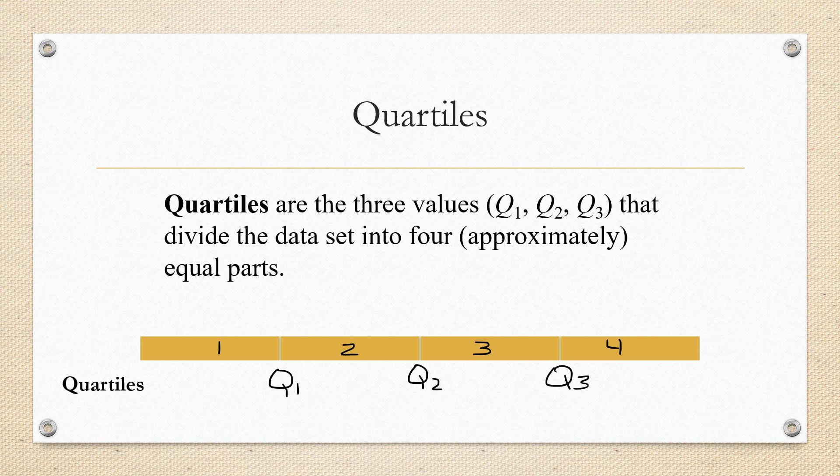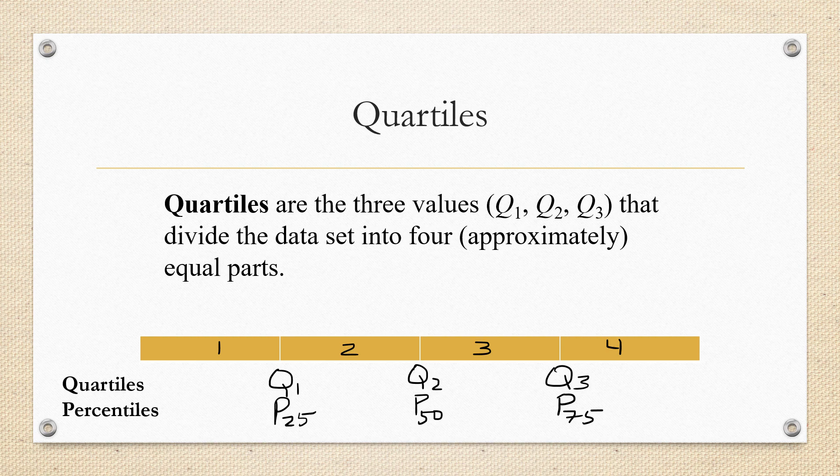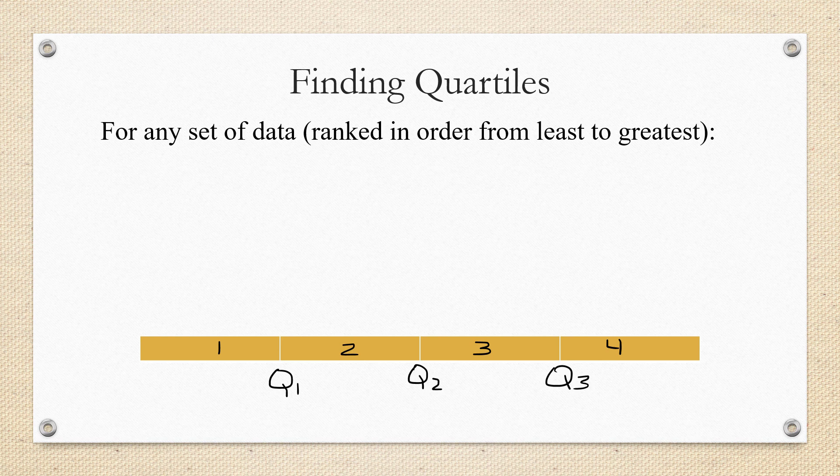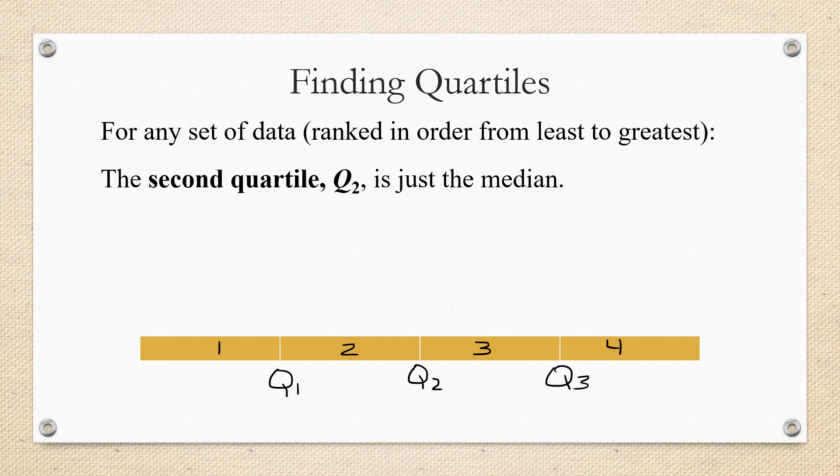Now you might think that Q1 being above a quarter of the data is going to correspond to percentile 25, and you wouldn't be wrong. And in different books we have different ways of finding quartiles, but in our book we do something else to find the quartiles. Instead of comparing the quartiles to percentiles, we're going to make a different observation that for any data set where you have the data ranked in order from least to greatest, the second quartile Q2 is right in the middle. That means that it's the median of the data set.